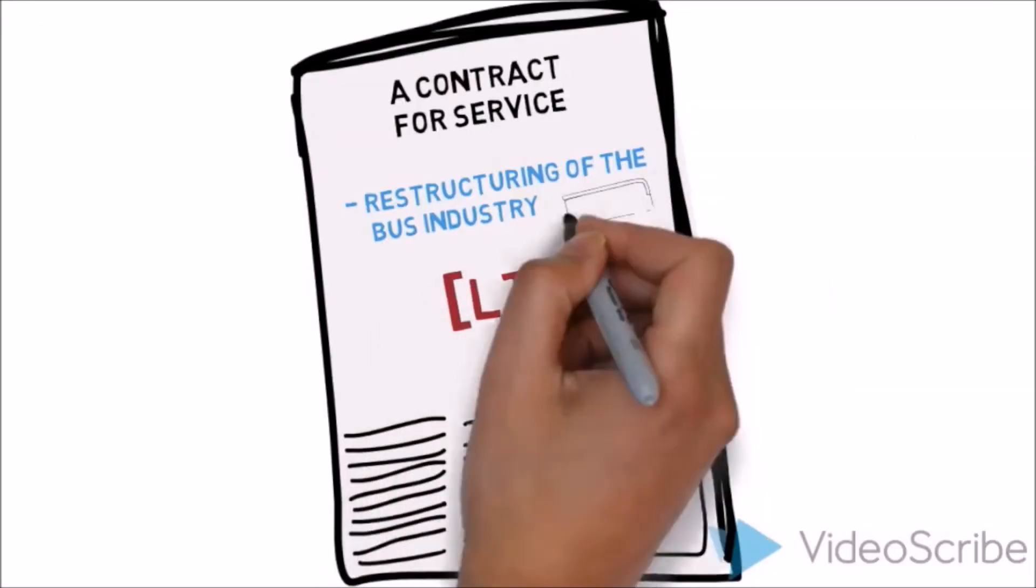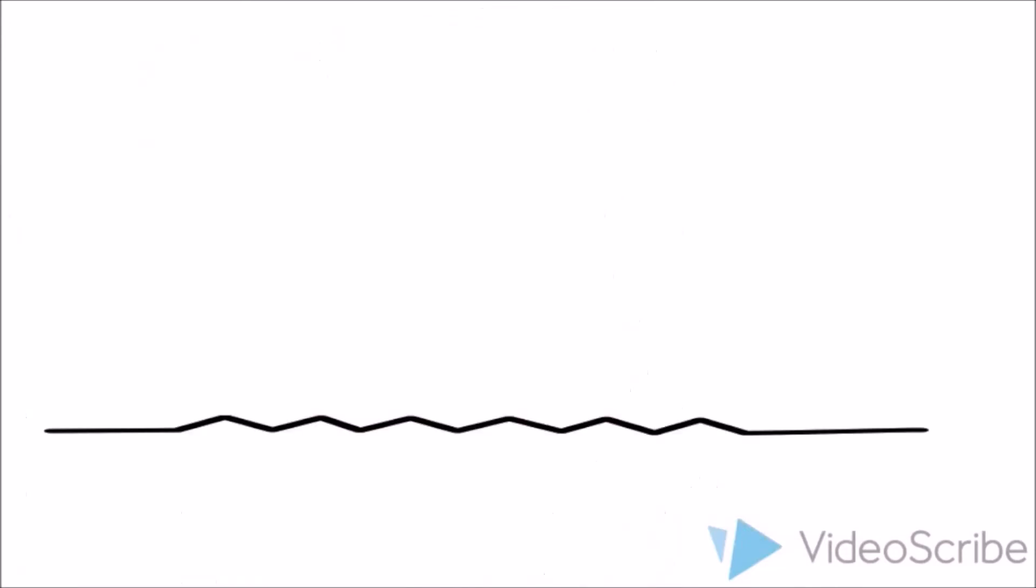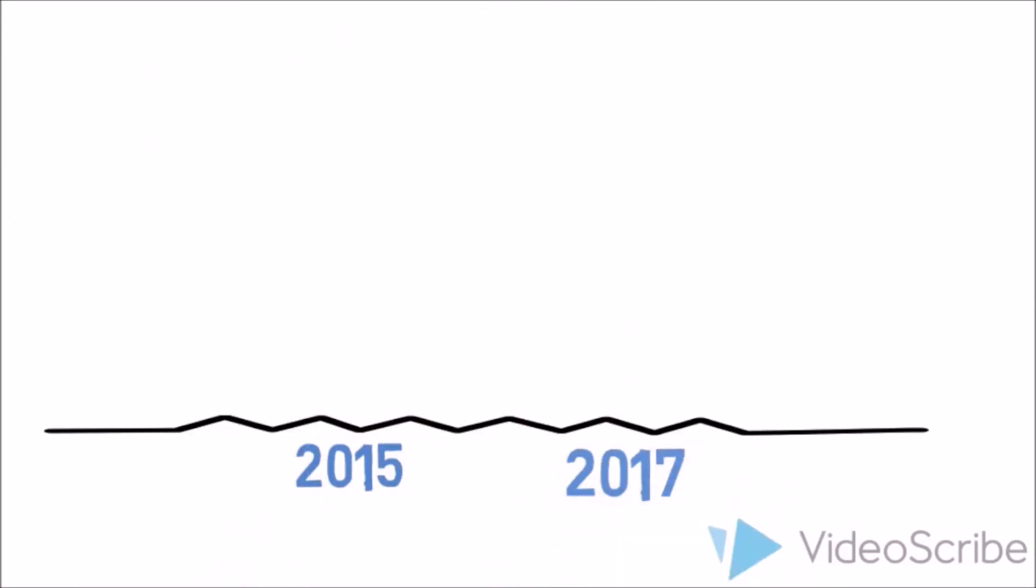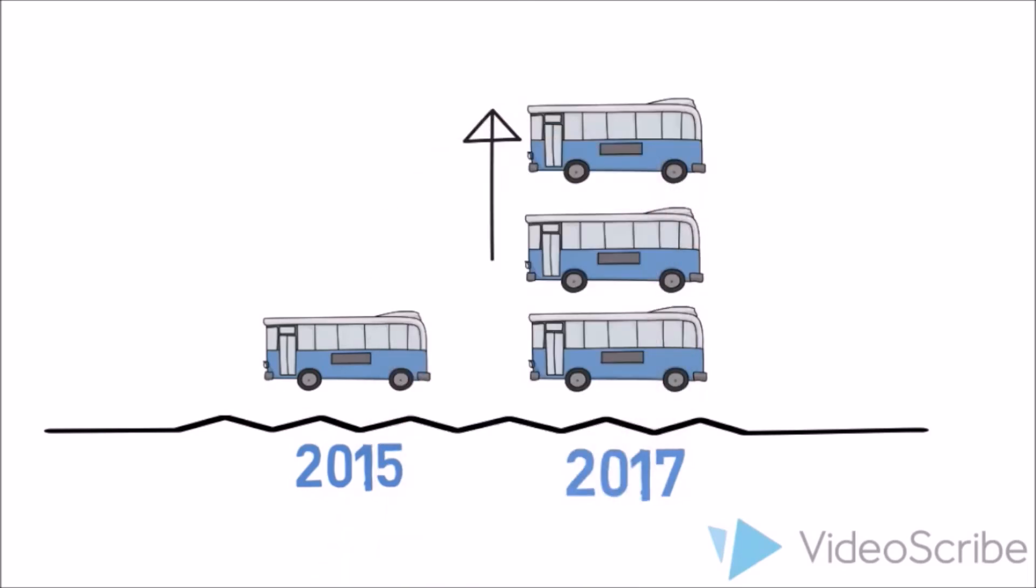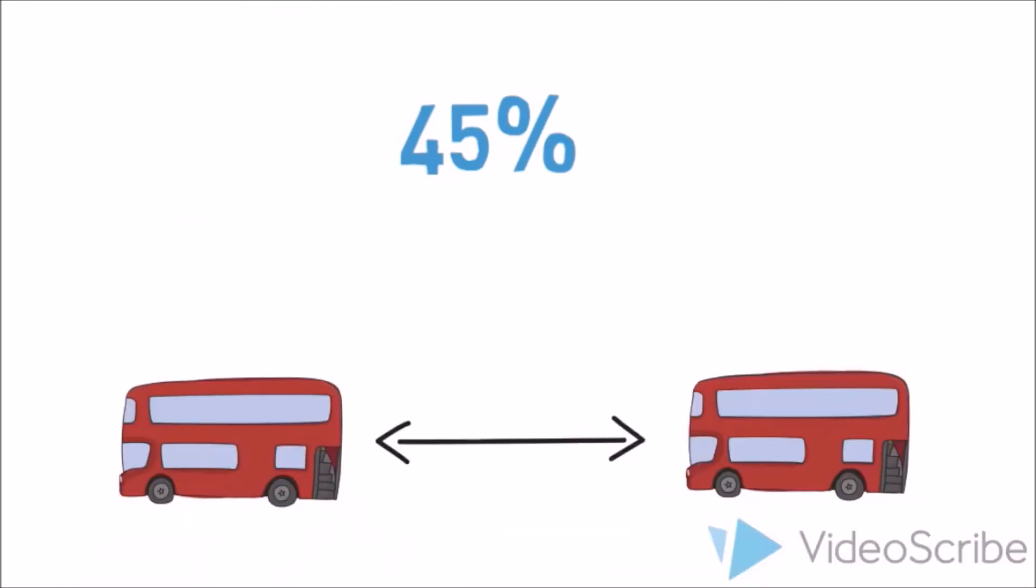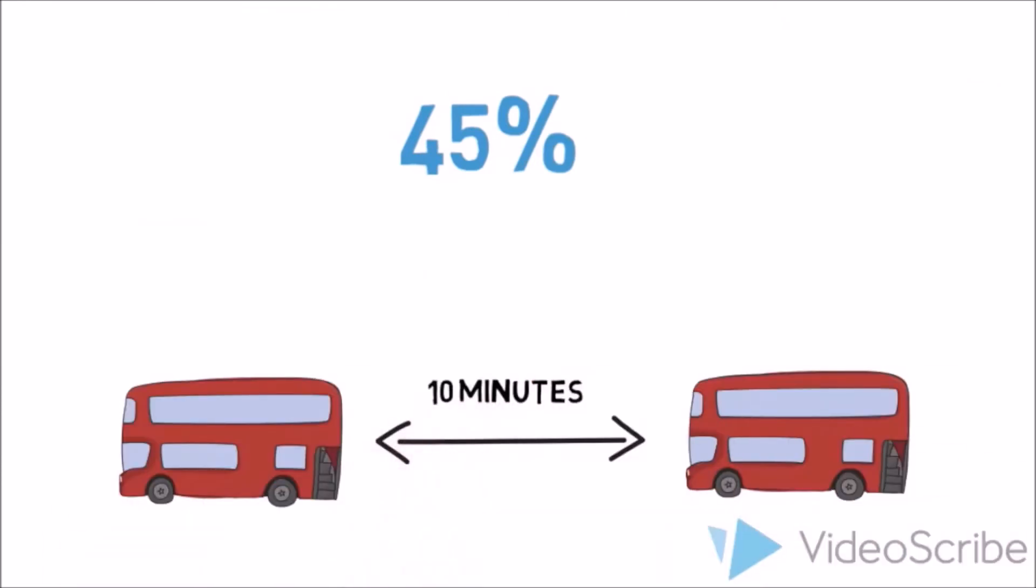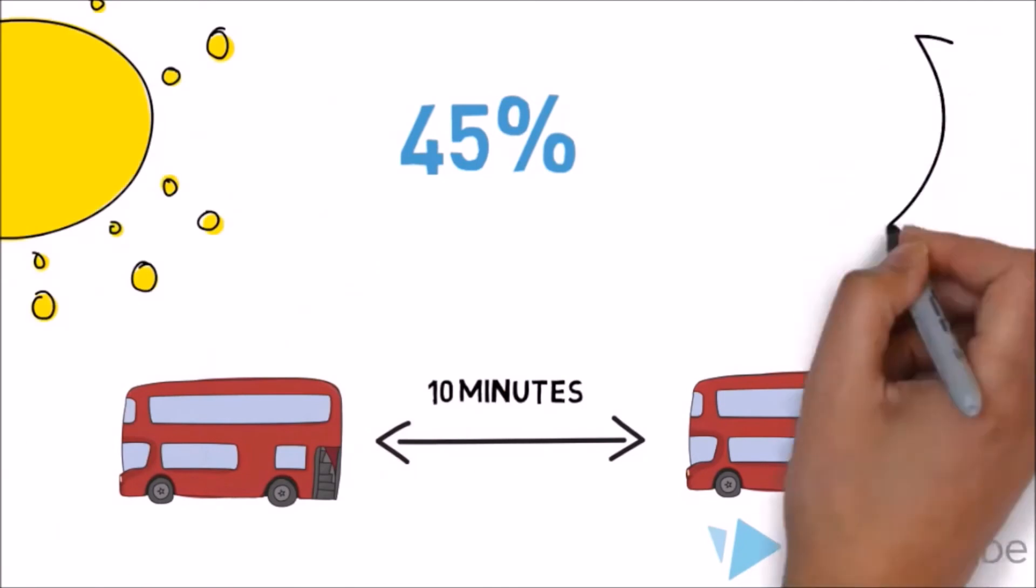With the new model, the LTA owns bus assets and contracts out service to operators. Within the next two years, a total of 450 buses are being purchased making the journey a breeze. 45% of the bus services are expected to have shorter intervals and buses are expected to arrive within 10 minutes during morning and evening peak periods.